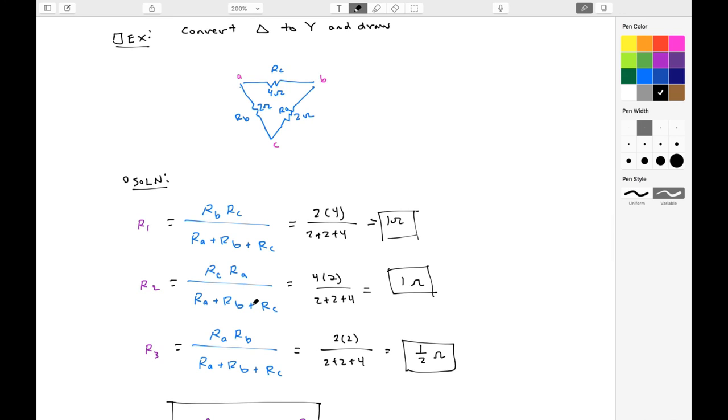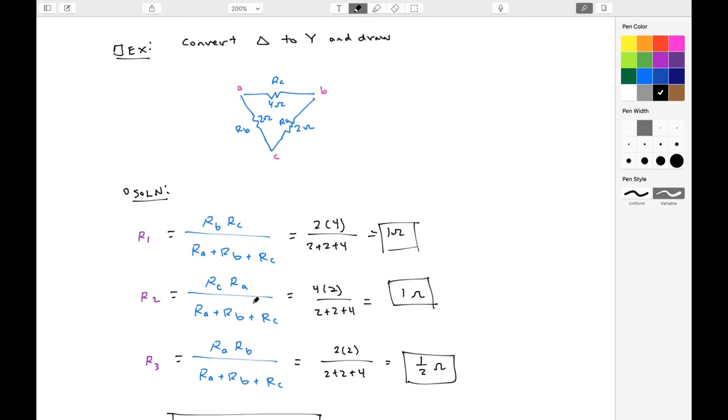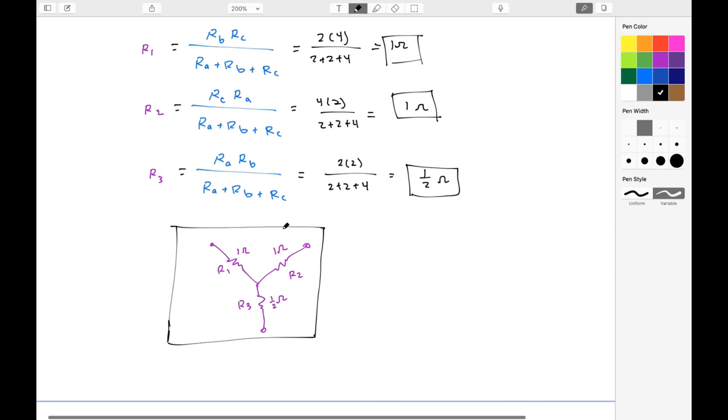So R2, similarly, should be Rc times Ra over that sum. So 8 over 8, again, that's 1 ohm. R3 should be equal to Ra, Rb over the sum. So that's 4 over 8, which is 1 half of an ohm.